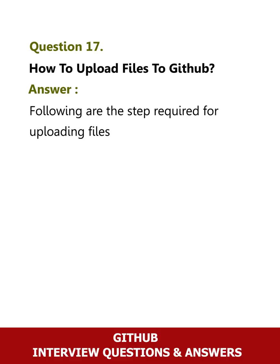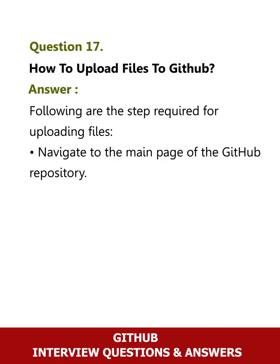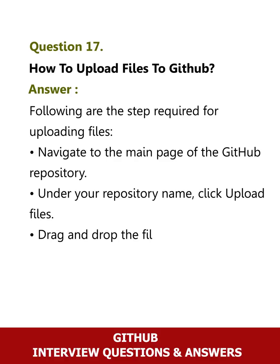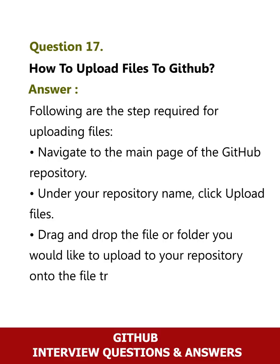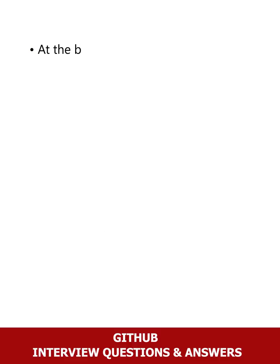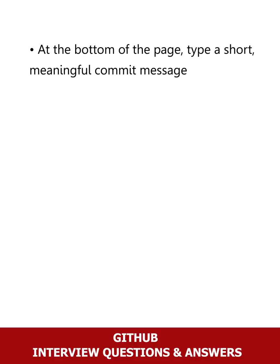Question 17: How to upload files to GitHub? Answer: The following steps are required for uploading files. Navigate to the main page of the GitHub repository. Under your repository name, click 'Upload files'. Drag and drop the file or folder you would like to upload onto the file tree. At the bottom of the page, type a short, meaningful commit message that describes the change you made to the file.